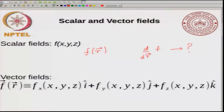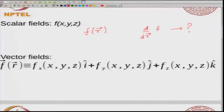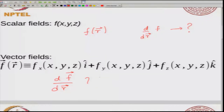You want to think about something like df by dr where r is a vector. This will be different because it turns out there are many ways to define this derivative, and it would be different if f were part of a vector field. If instead of having a scalar field you have a vector field, then how would you think of differentiation of the vector field with respect to a vector? In doing this we will look at three different definitions of quantities that look like derivatives.